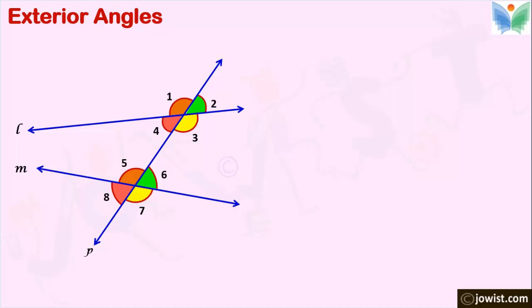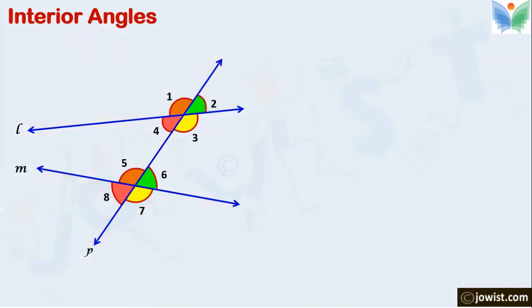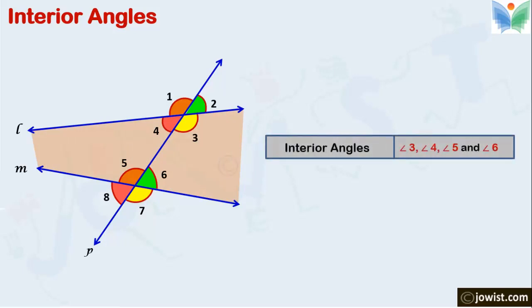Let's shade the outer part of lines L and M. The angles which fall under the shaded part are exterior angles. Here 1, 2, 7 and 8 are exterior angles. Similarly when we shade the region between lines L and M, the angles 3, 4, 5 and 6 come under the shaded part. Hence these angles are interior angles.